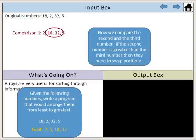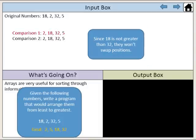Now we compare the second and the third number. If the second number is greater than the third number, then they need to swap positions. Since 18 is not greater than 32, they won't swap positions.